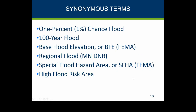Several terms are basically synonymous: the 1% annual chance flood, the 100-year flood, the Base Flood Elevation (BFE) used in FEMA maps, and the 'regional flood' referenced in Minnesota statutes and rules. When FEMA, lenders, or insurance agents discuss those areas, they call it the Special Flood Hazard Area — that 100-year high-risk zone shown as light blue on newer maps. Generally I'll just call it the high flood risk area.